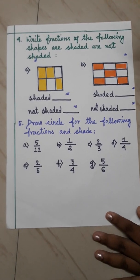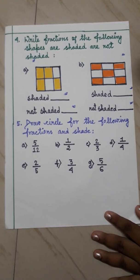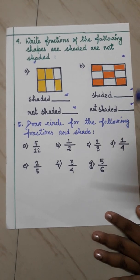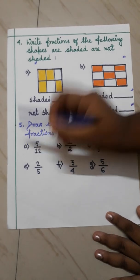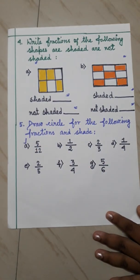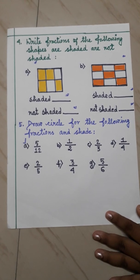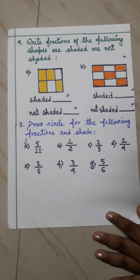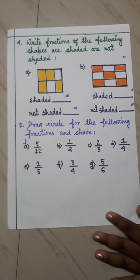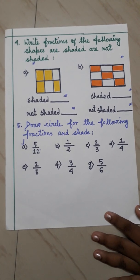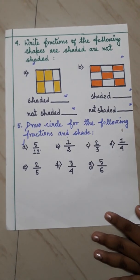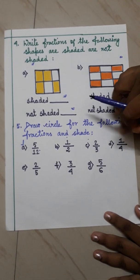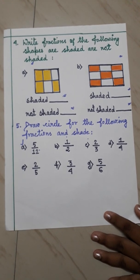Question number 5 is the last one: draw a circle for the following. You have to draw a circle for each question and shade the fraction as given. For example, the first one shows 5 by 12 — that means you draw a circle, divide it into 12 parts, and shade 5 parts. Similarly for B, C, and D, you have to draw a circle and shade the given fraction.